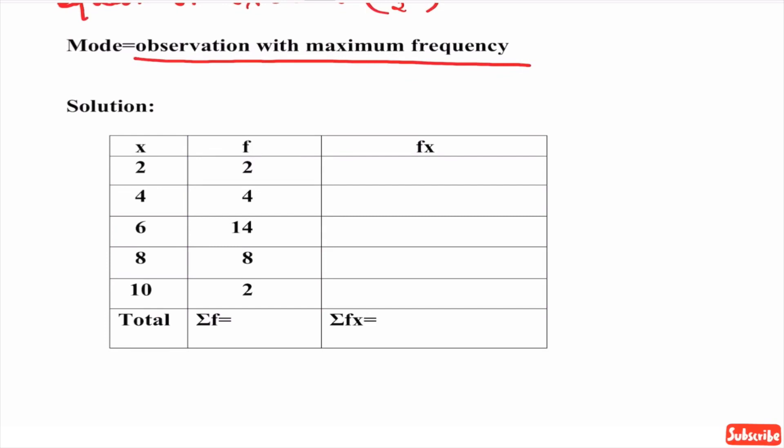Let us make first the table. First column is x given. Second column is f which is given. Third column we will be making for f into x. How to find that? First f value is 2 into corresponding x value is 2. So, 2 into 2 equals 4.